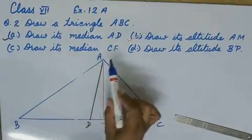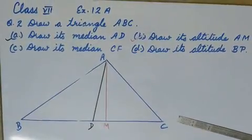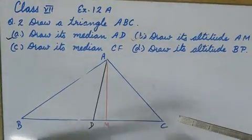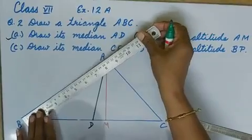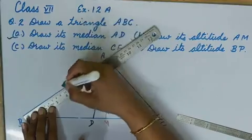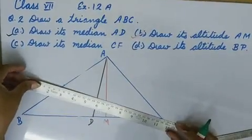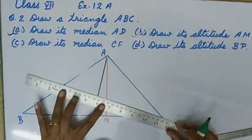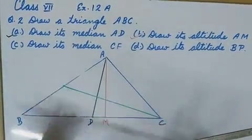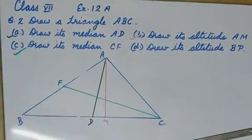C part. Draw its median CF. For median CF, we should start drawing the line from C to the midpoint of AB. So, we will measure AB and then mark midpoint. Join the midpoint to point C. So, CF is the median.